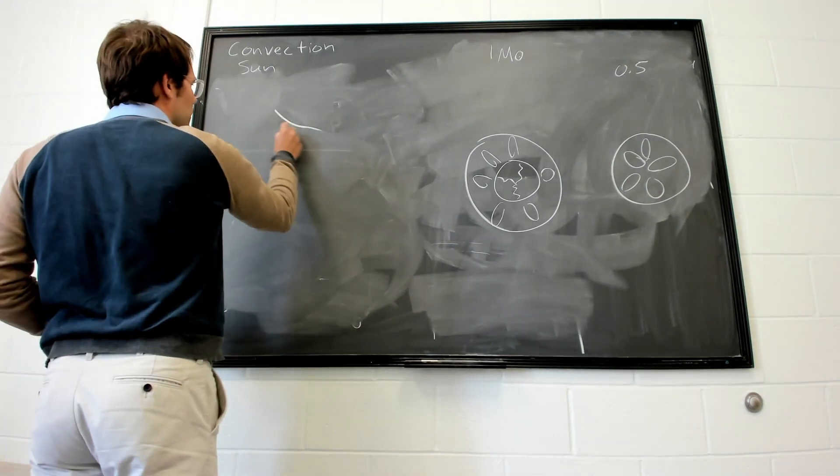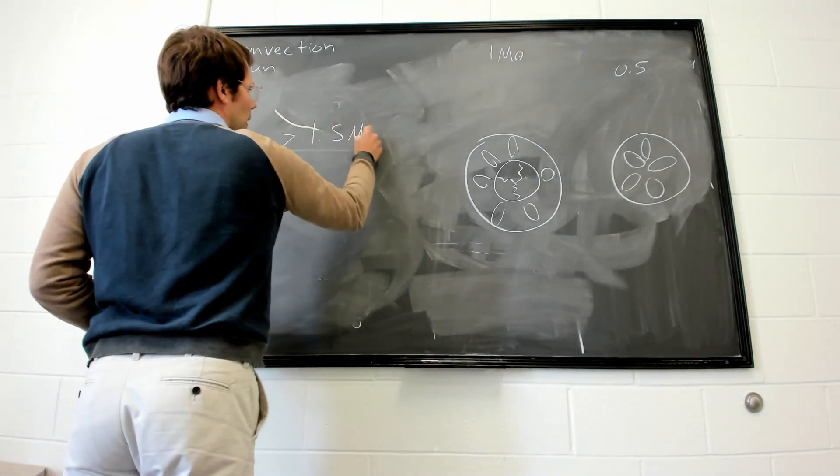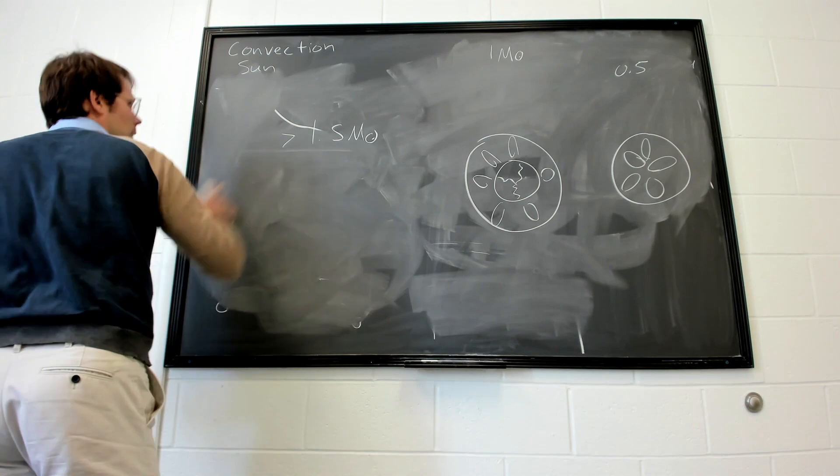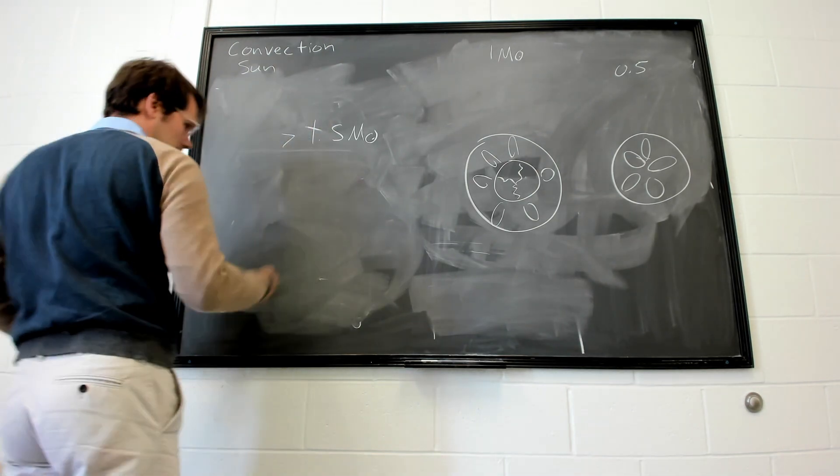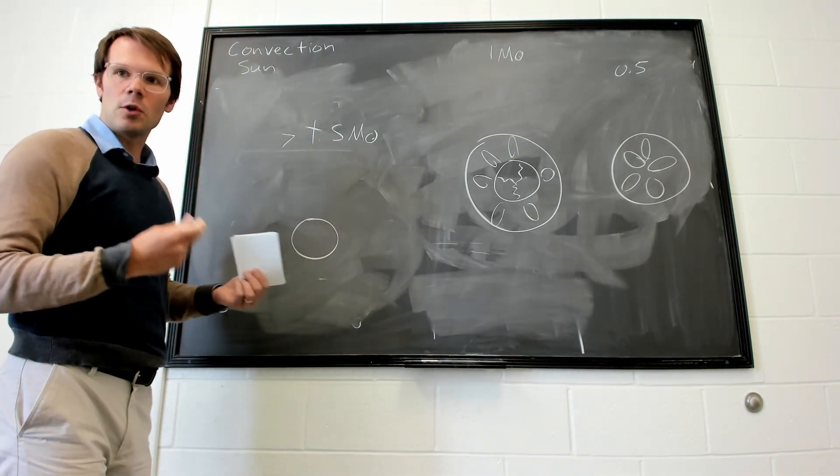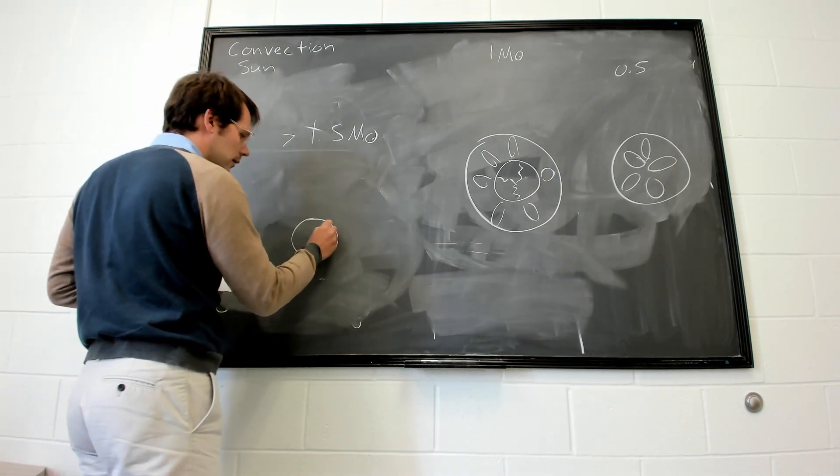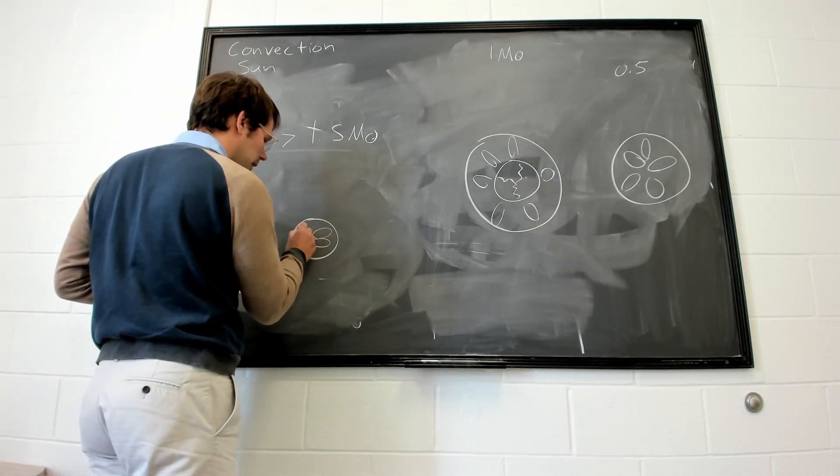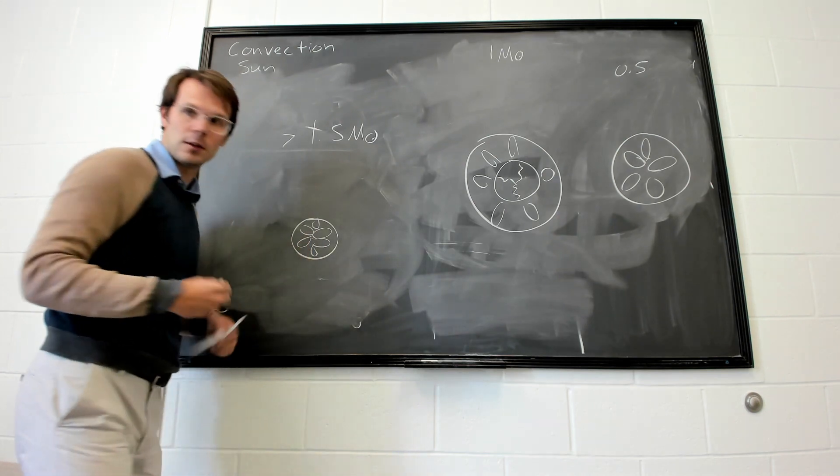This energy generation inside the core can be so vigorous that the temperature gradient becomes extremely high and convection actually occurs in the core.